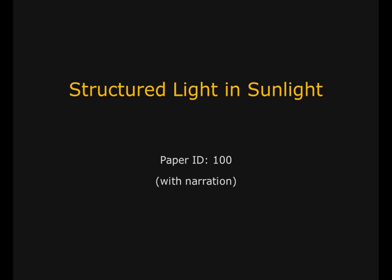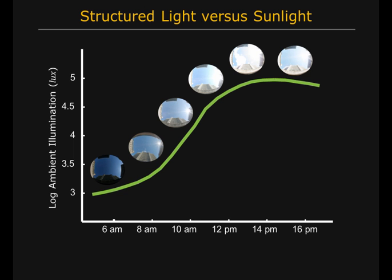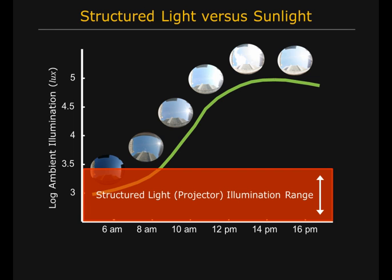In this paper, we consider structured light 3D scanning outdoors, where there is strong ambient illumination due to sunlight. This is the plot of sunlight intensity over a typical day, and this is the intensity range of current structured light sources. Structured light is often 2 to 5 orders of magnitude weaker than sunlight.